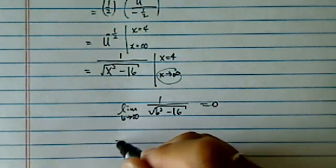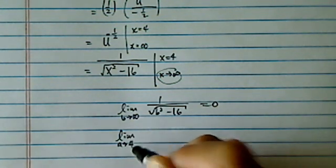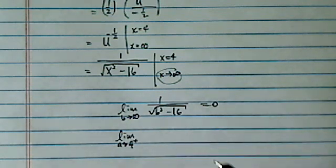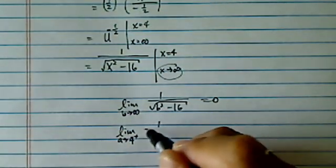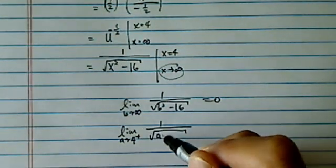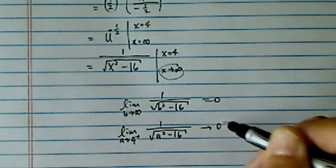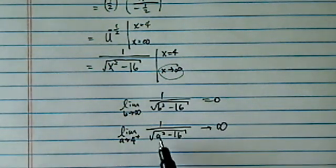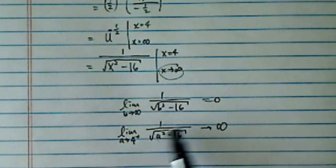On the other hand, when a is approaching to 4 from the positive side, 1 over square root of a squared minus 16, this becomes infinity because we're approaching to 0.